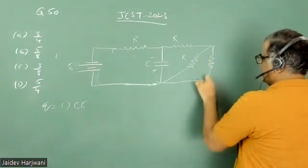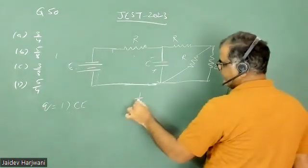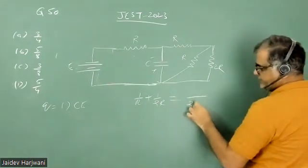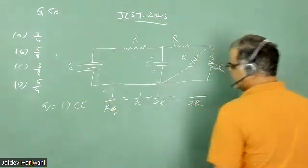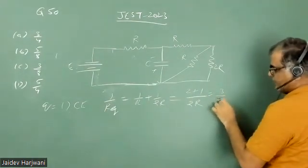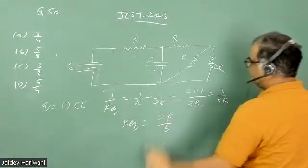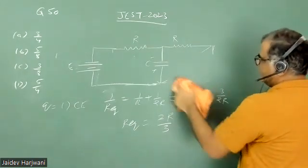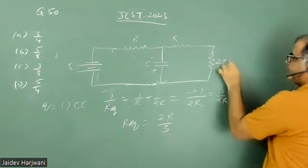So this is basically 2R, and now 2R is parallel with this R. So this will give me 1/R plus 1/2R, which gives an equivalent of these two resistances. Two plus one is three, upon 2R, so the equivalent of these two resistances is 2R/3. So let me remove these resistances and put resistance 2R/3.